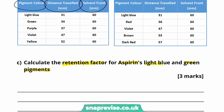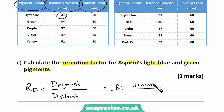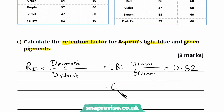Whenever I approach a maths question, I always write the general formula so the examiner knows I'm familiar with it. The retention factor equals the distance moved by the pigment divided by the distance moved by the solvent. For aspirin's light blue pigment, the distance the pigment moves is 31mm, divided by the solvent front of 60mm, giving a retention factor of 0.52. For the green pigment, it's moved 34mm over 60mm, which gives 0.57.